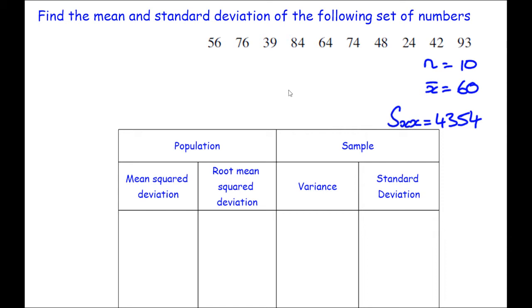So we have the population mean squared deviation, the population root mean squared deviation, the sample variance, and then the sample standard deviation.